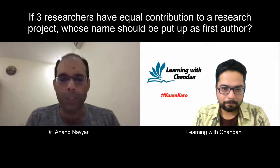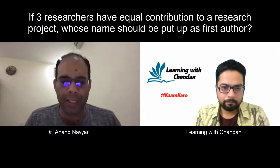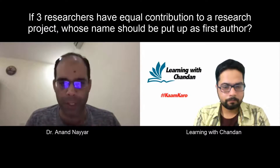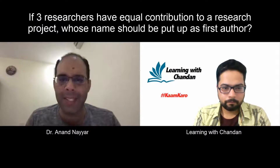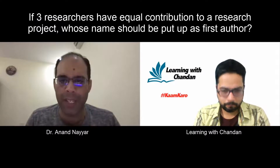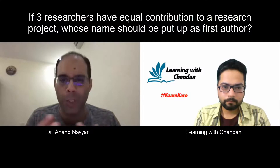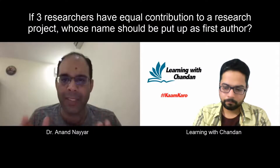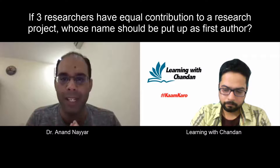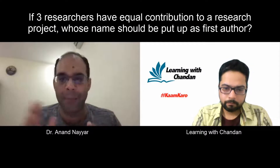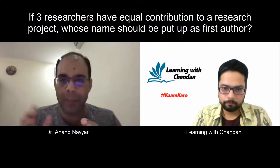Regarding your question — there is a research paper with three authors, and who should be the first authored person — before I answer this, I would like to tell you that the rule of thumb says that whosoever has the highest level of contribution in a research paper, that person should be written as number one.